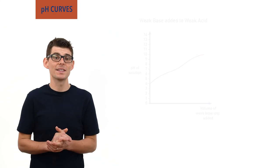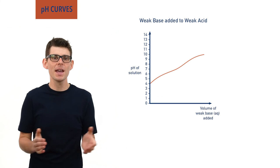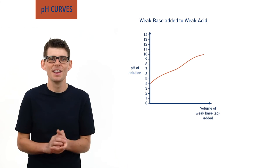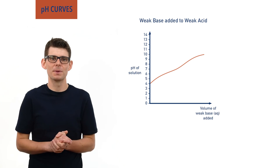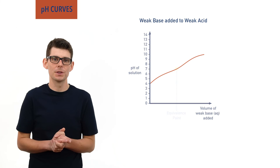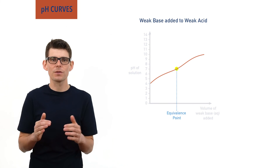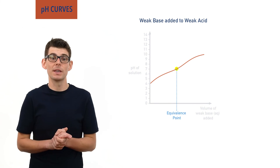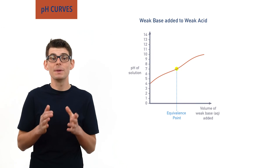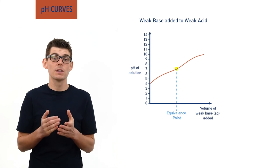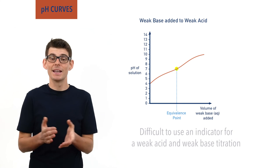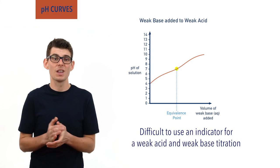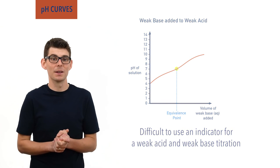For a weak acid and weak base titration, the pH curve is a bit of a mess. There is no sudden change in pH around the equivalence point, where the curve kind of kinks in the middle. This lack of sudden pH change means indicators can't be used to find the equivalence point easily, and as a result, weak acid and weak base titrations aren't very practical to carry out.